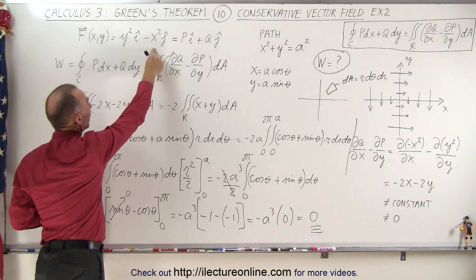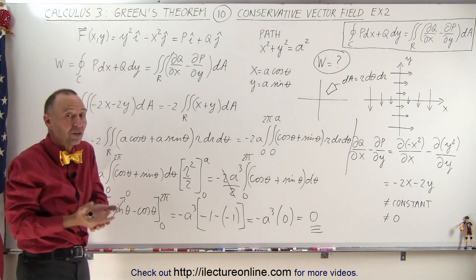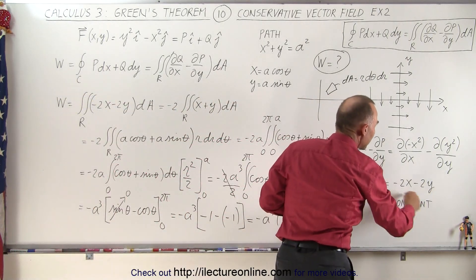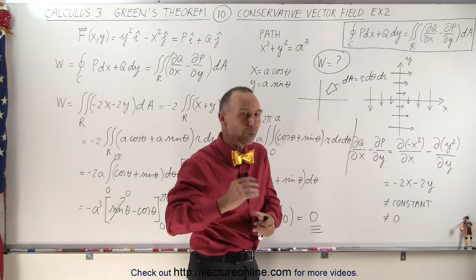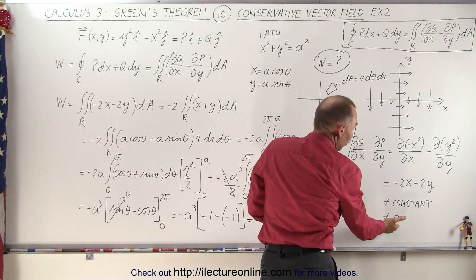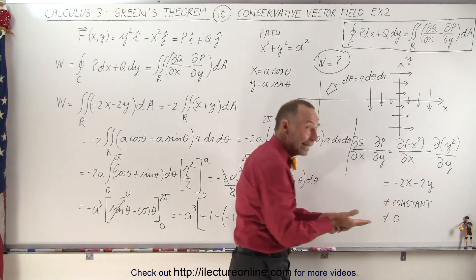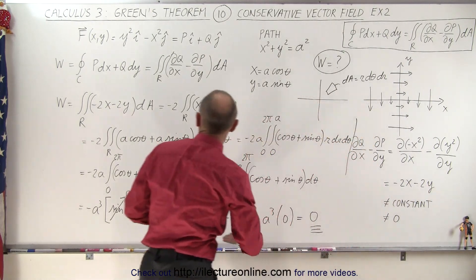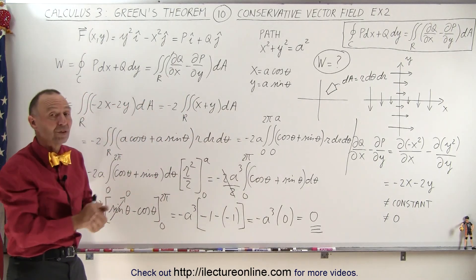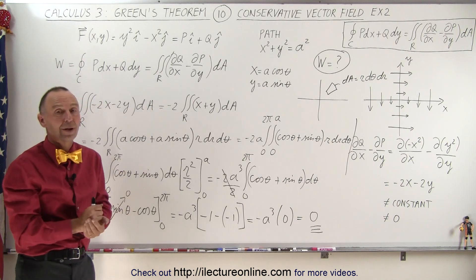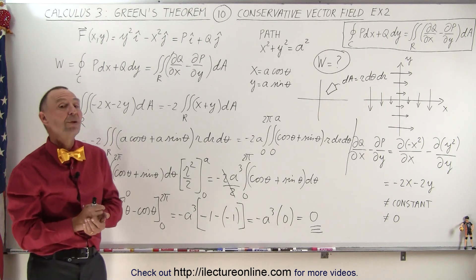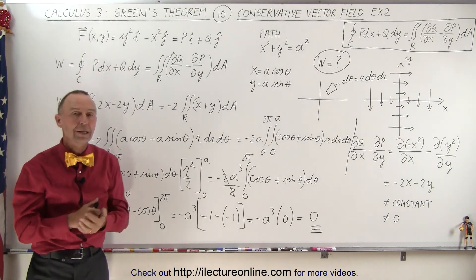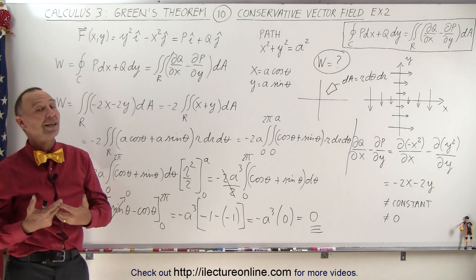The work done for that line integral — with a vector field defined by this equation, going one complete closed path — equals zero, which indicates this is indeed a conservative vector field. We didn't see that right away because the Green's theorem integrand was not a constant value. If it had been constant and equal to zero, it would have been easy to confirm. Since it was not constant, we had to go through the actual integration. That's how we use Green's theorem — it's a very effective way to solve line integrals and find work done through a vector field on a closed path.